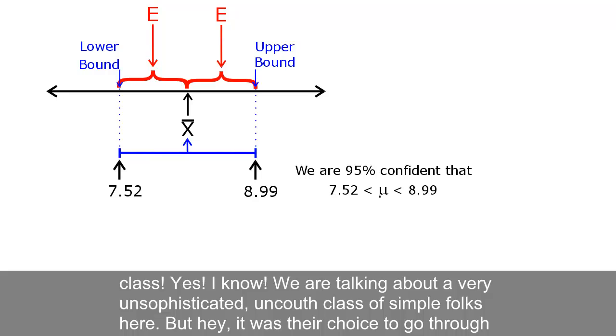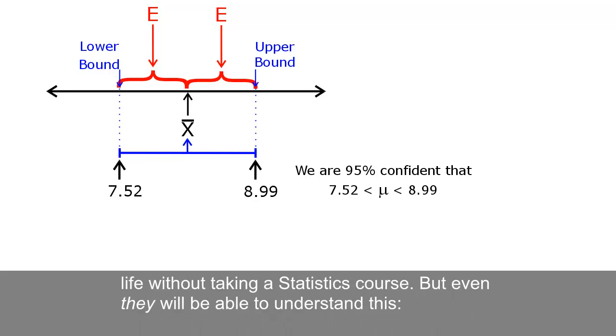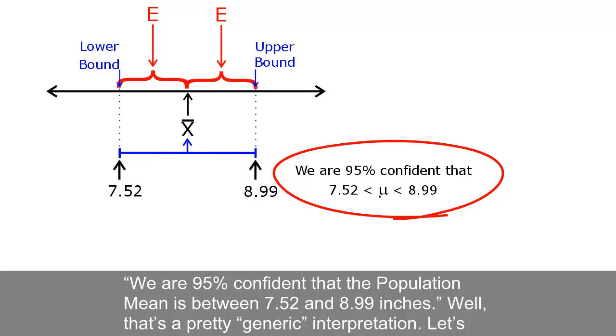But hey, it was their choice to go through life without taking a statistics course. But even they will be able to understand this. We are 95% confident that the population mean is between 7.52 and 8.99 inches.